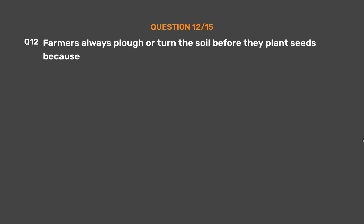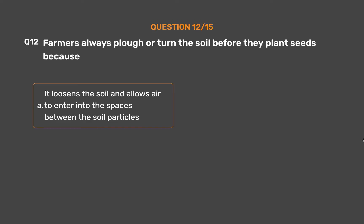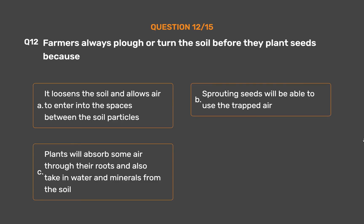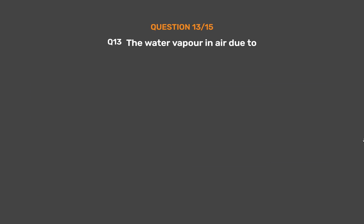Question number twelve: Farmers always plow or turn the soil before they plant seeds because — option A: it loosens the soil and allows air to enter into the spaces between the soil particles, option B: sprouting seeds will be able to use the trapped air, option C: plants will absorb some air through their roots and also take in water and minerals from the soil, option D: all of them. The correct answer is option D: all of them.